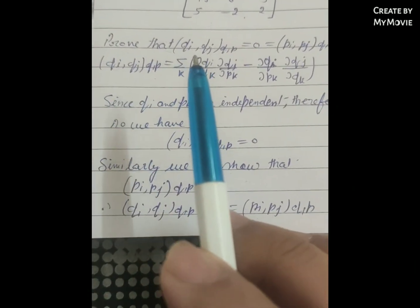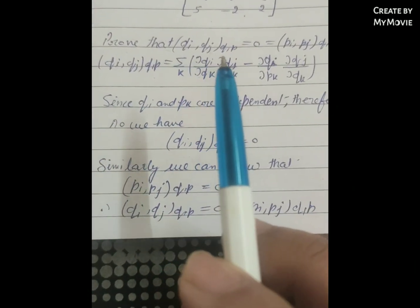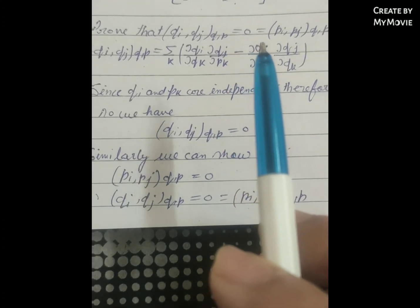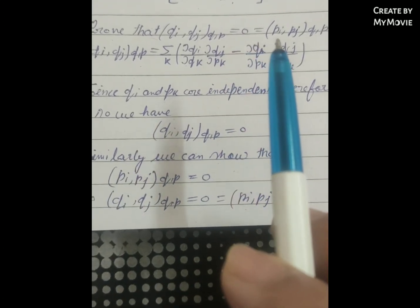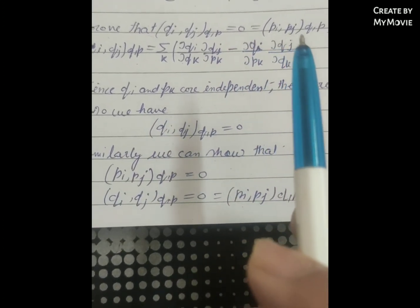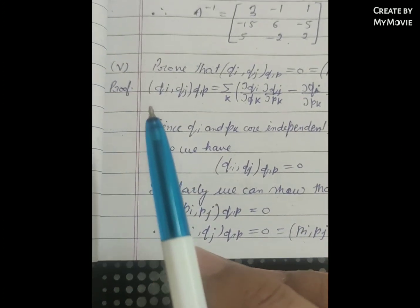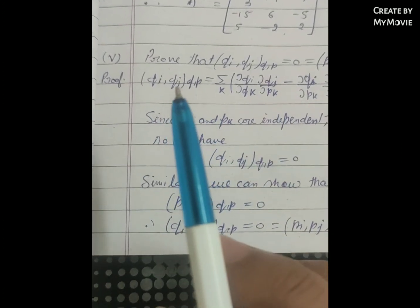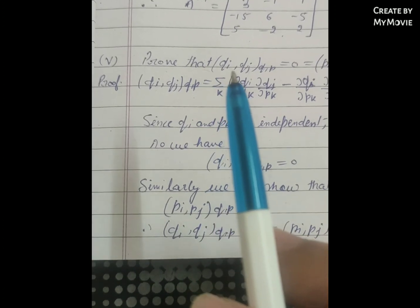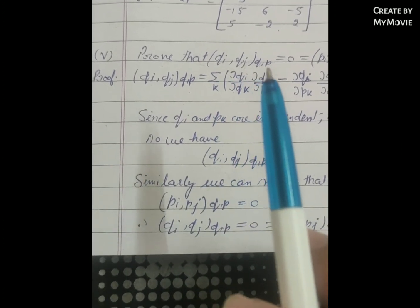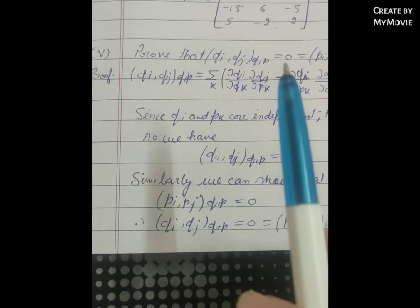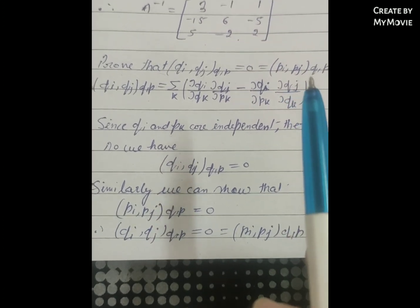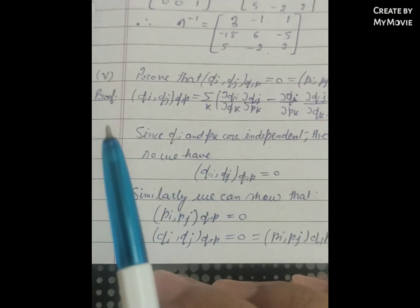Prove that (qi, qj)_{q,p} = 0 = (pi, pj)_{q,p}. That is, open bracket qi qj with respect to q,p is equal to open bracket qi qj with respect to q,p.